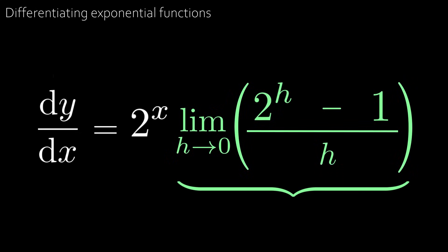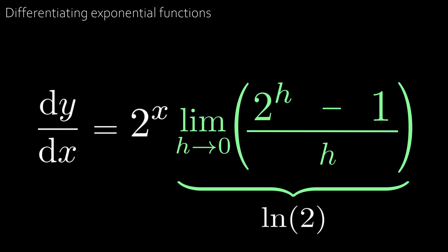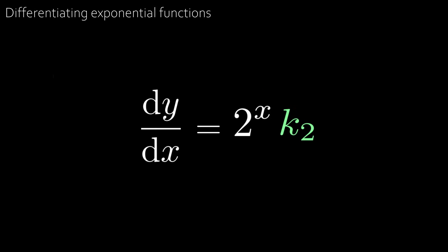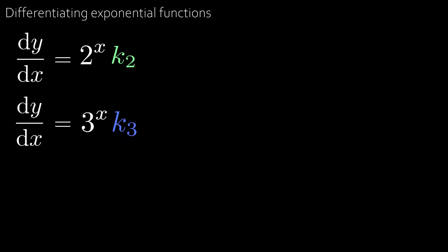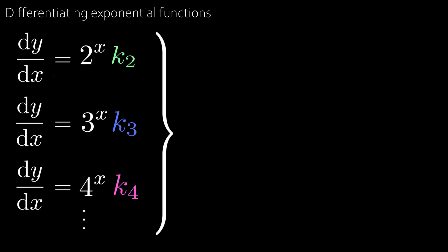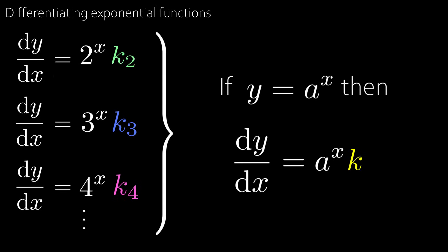The remaining limit evaluates to an irrational number 0.6931... which we'll call the constant k₂. So dy/dx = 2ˣ · k₂. We can do the same for y = 3ˣ to get dy/dx = 3ˣ · k₃, and for y = 4ˣ we get dy/dx = 4ˣ · k₄. In general, if y = aˣ then dy/dx = aˣ · k, where k is some constant.